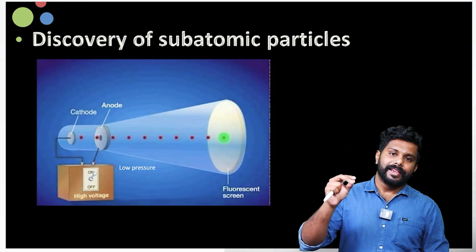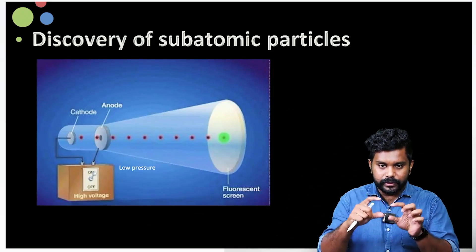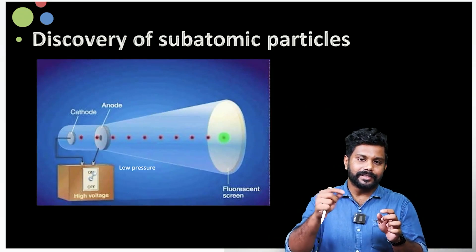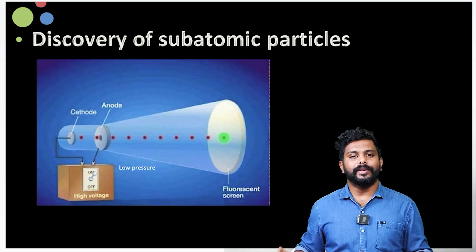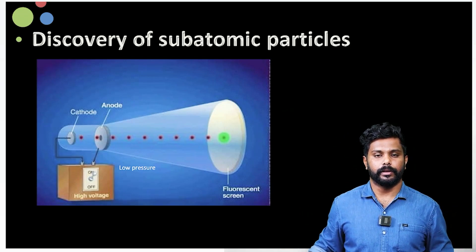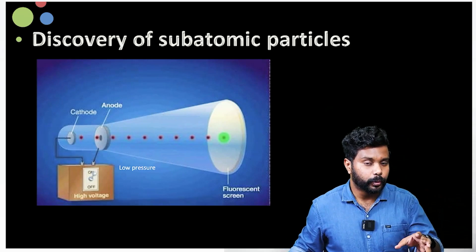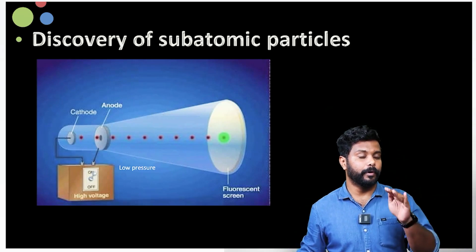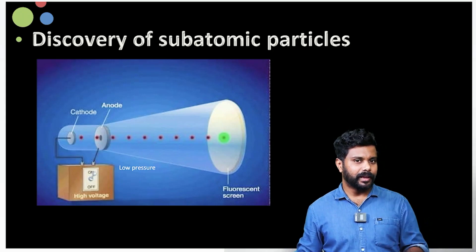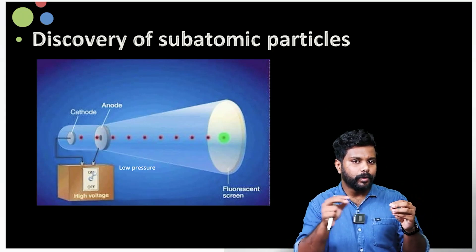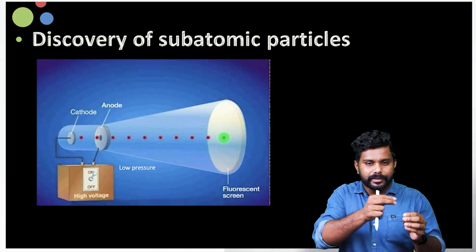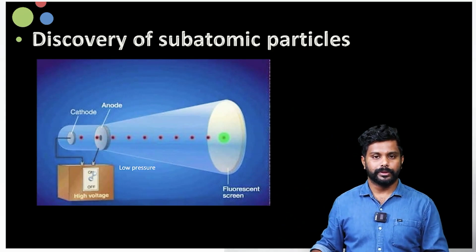Now, what we use is a glass tube, and the glass tube will have a gas. At both ends, we have two electrodes — one is the cathode and the other is the anode. When electricity is passed at high voltage and low pressure, a beam is transferred from the cathode to the anode.